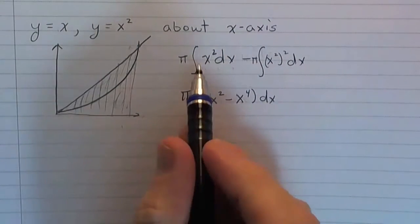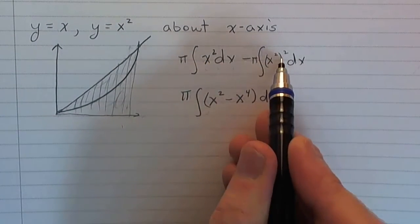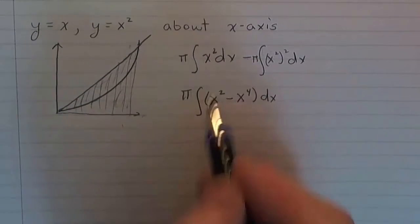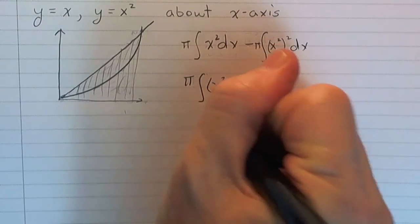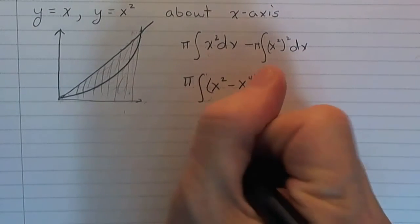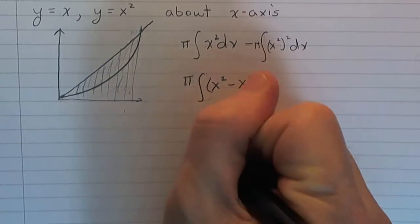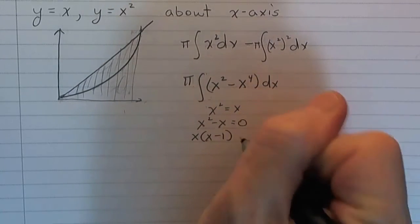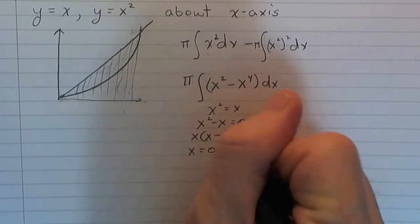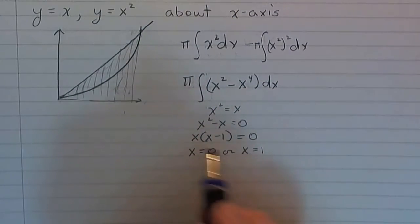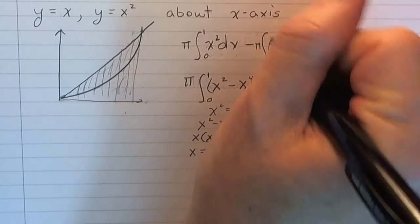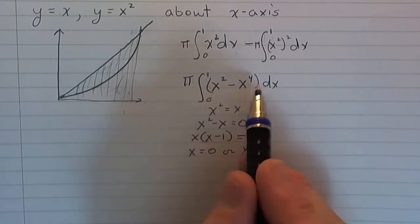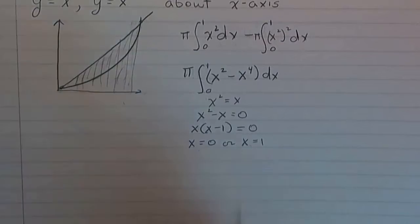So combining these integrals — the first one minus the second one with pi factored out — we get x squared minus x to the fourth. We still need the limits of integration, so I set x squared equal to x and solve: factoring out x gives x equals zero or x equals one. So my bounds of integration are zero to one, and this is what we use to find the volume of that solid.